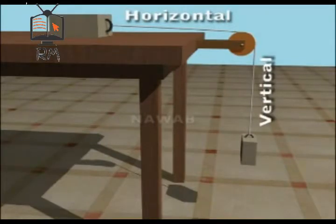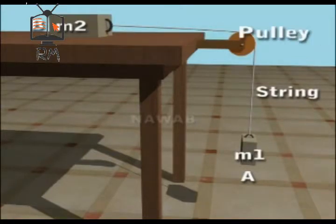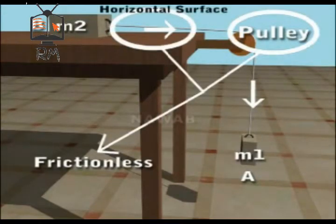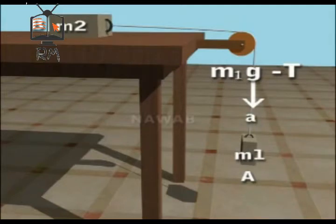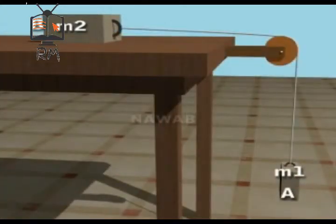Case 2: When one body moves vertically and the other moves horizontally. Two bodies A and B having masses M1 and M2 respectively are connected to an inextensible string which passes over a pulley. Body A moves vertically downward while body B moves on a horizontal smooth surface towards the pulley. It is assumed that the pulley and the horizontal surface are frictionless. The downward resultant force on body A is M1G − T, due to which it moves downward with acceleration A. By Newton's second law, M1G − T = M1A.